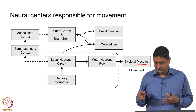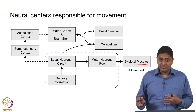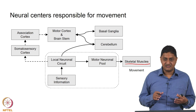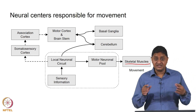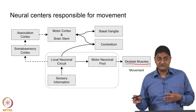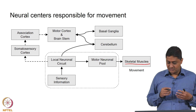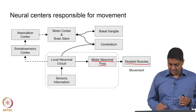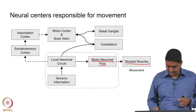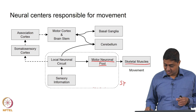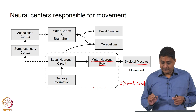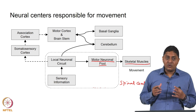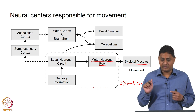Excitation-contraction coupling, the sliding filament theory, and so on — those we discussed. But how is the muscle fiber itself getting activated? We said that is done through alpha motor neurons. We discussed the mechanism of how alpha motor neurons communicate with muscle fibers — the case of the neuromuscular junction. These motor neuronal pools are located in the spinal cord; the entire dashed box shown here represents the spinal cord.